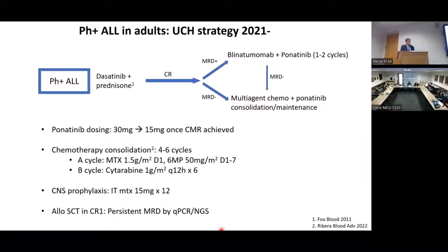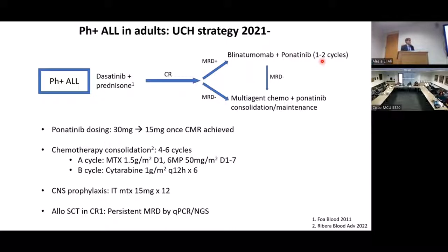We designed a regimen for patients with newly diagnosed Ph-positive ALL where they initially receive a combination of dasatinib and prednisone, which is a well-established induction regimen in adults. Patients who achieve remission are then switched from dasatinib to ponatinib. Patients who have persistent MRD in remission can go on to receive up to two cycles of blinatumomab with ponatinib. Patients who then achieve a complete molecular remission can go on to a moderate-intensity chemotherapy consolidation.